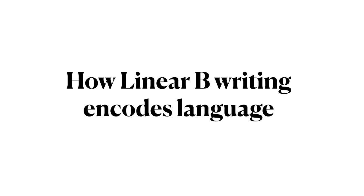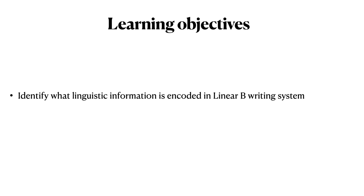This is Ling270, Language, Technology, and Society. In this module, we are exploring the issue of how writing represents language. In this recording, we are exploring the Linear B writing system, an ancient writing system identified with cultures found on the Mediterranean island of Crete. Let's explore the question of how the Linear B writing system encodes language. Our learning objective in this video is to identify what linguistic information is encoded in the Linear B writing system.